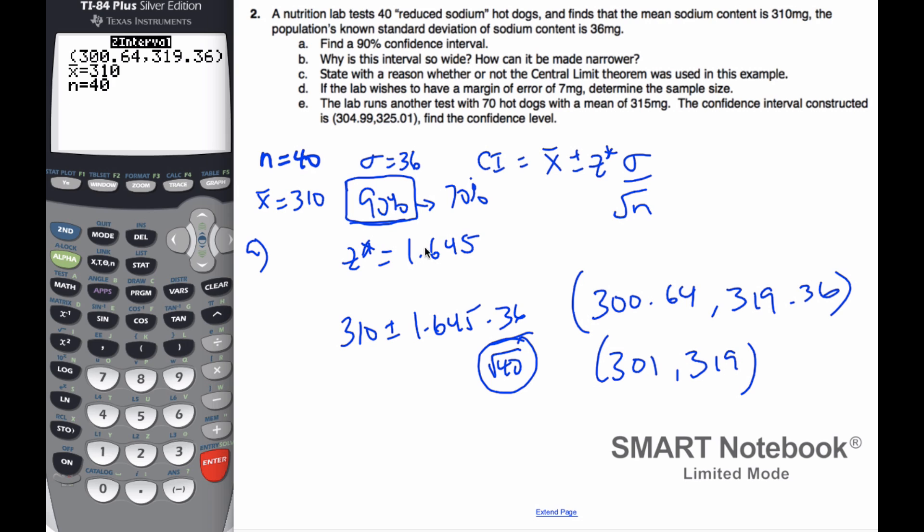Part C says, state with a reason whether or not the central limit theorem was used. Well, the answer is most definitely, because what we can say is this is a normal distribution with a mean of 310, and I know that I had 36 over the square root of 40 squared. This here is my variance because it's squared.